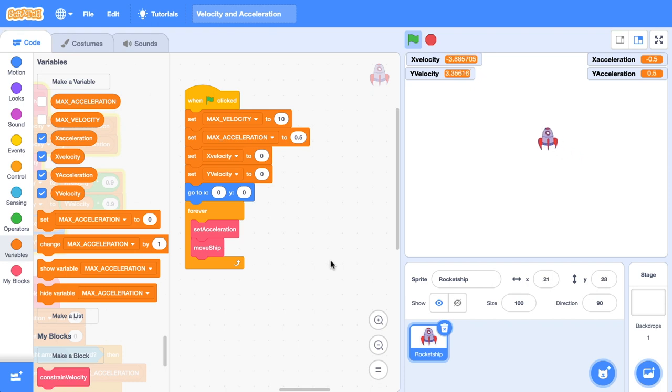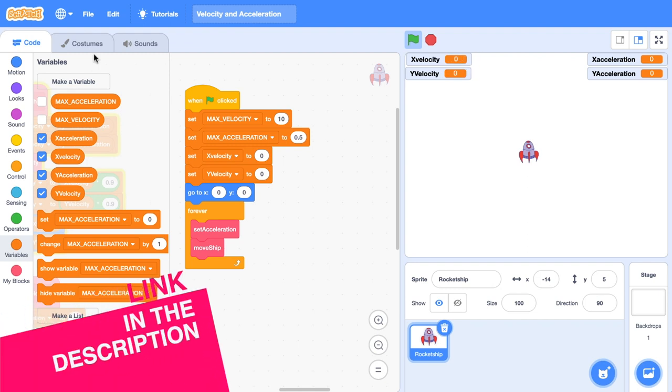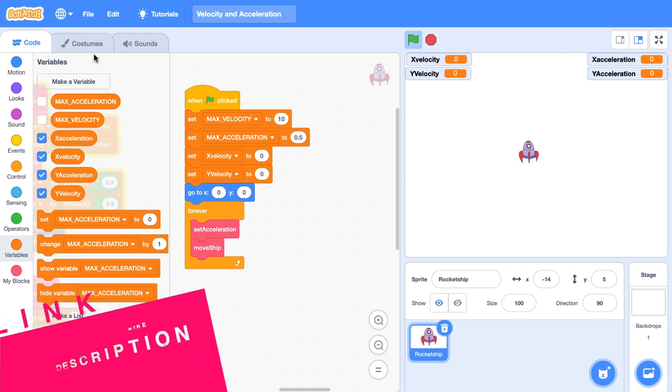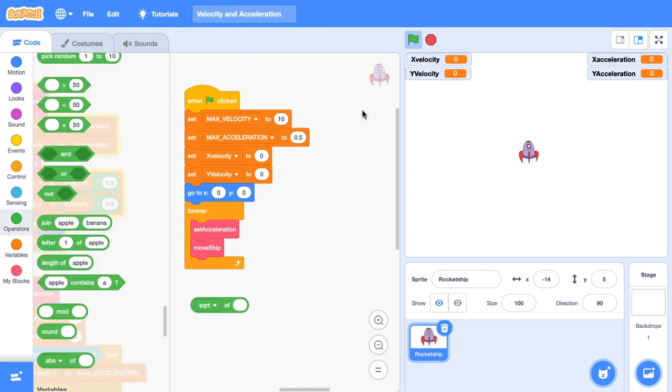In the last tutorial, I showed you how to get this rocket ship moving across the screen using X velocity and Y velocity. As always, I've got a starter project available for you down in the description and there's also a card in the top right hand corner where you can go check out that previous tutorial. You can get through this tutorial without watching the previous one, but if you've got no idea what I mean by X velocity and Y velocity, I strongly encourage you to watch it.